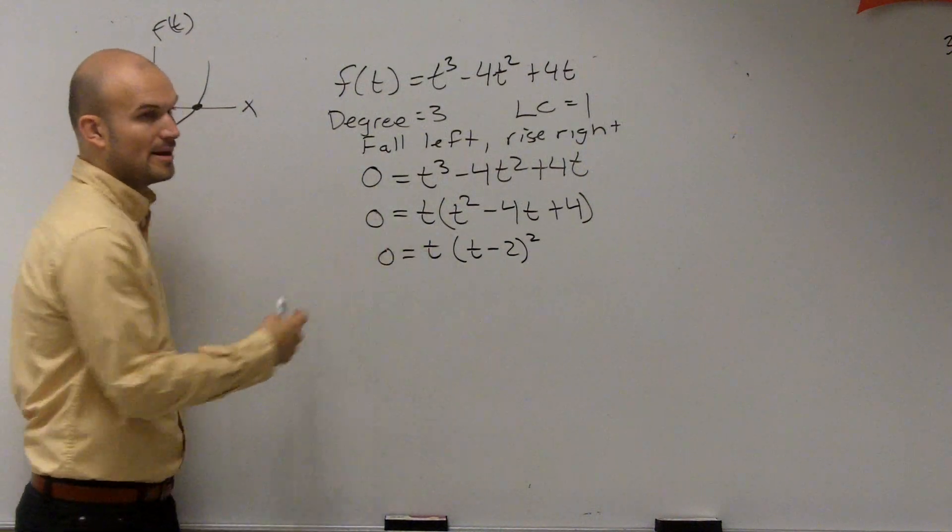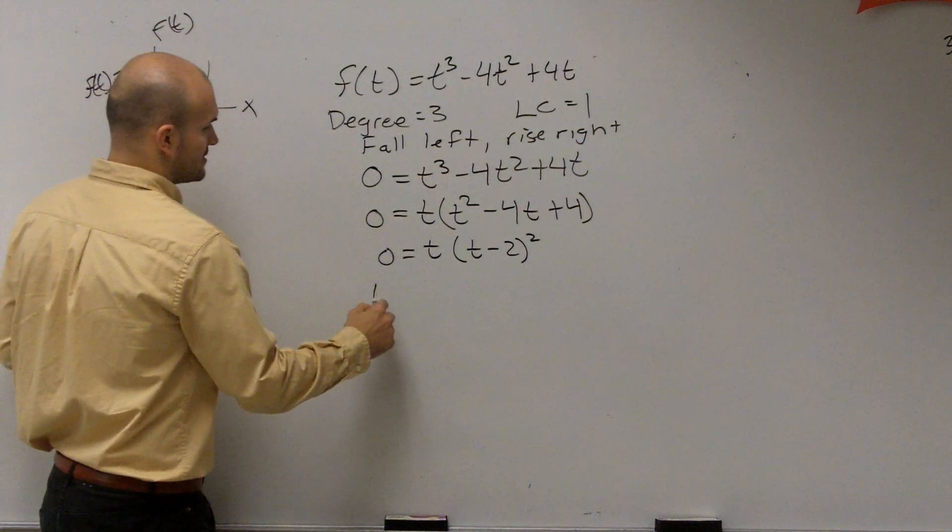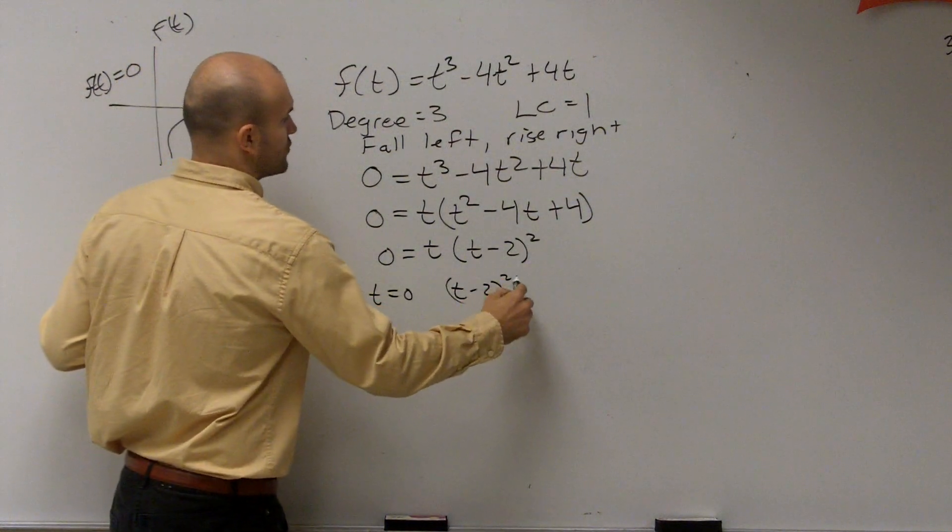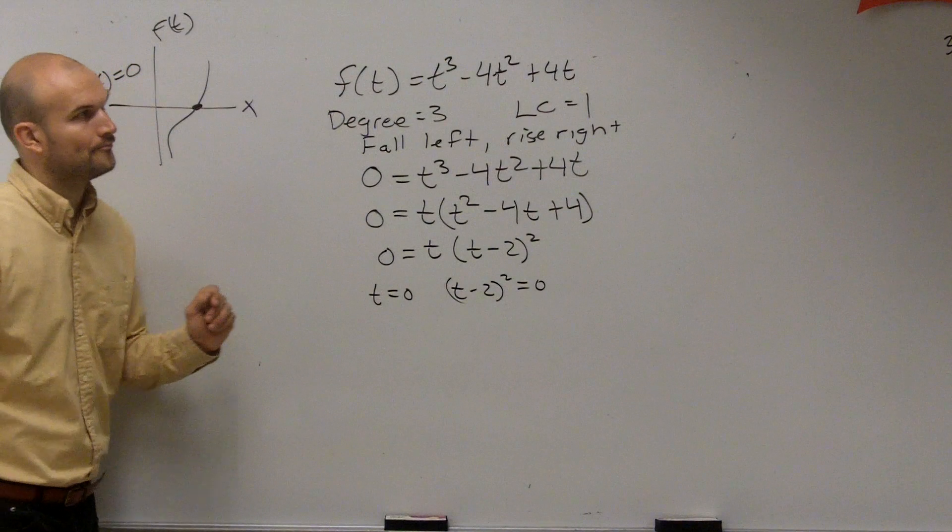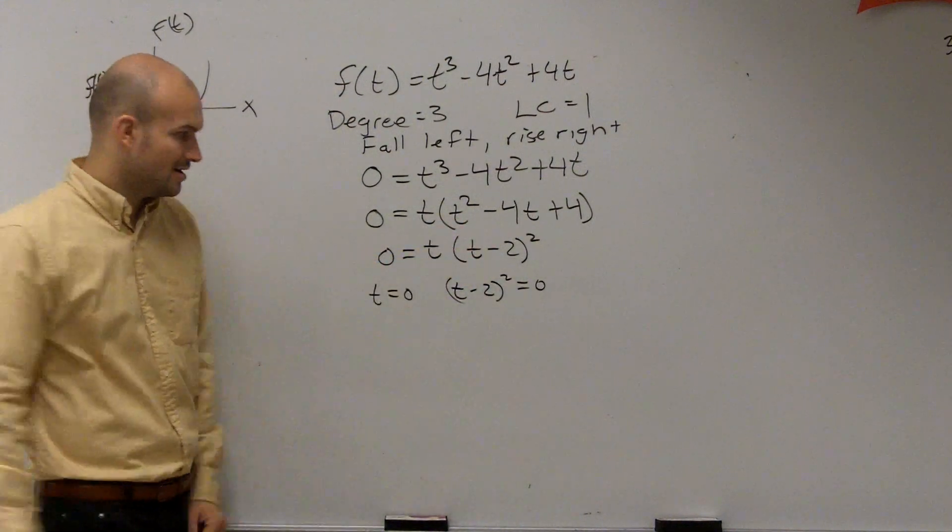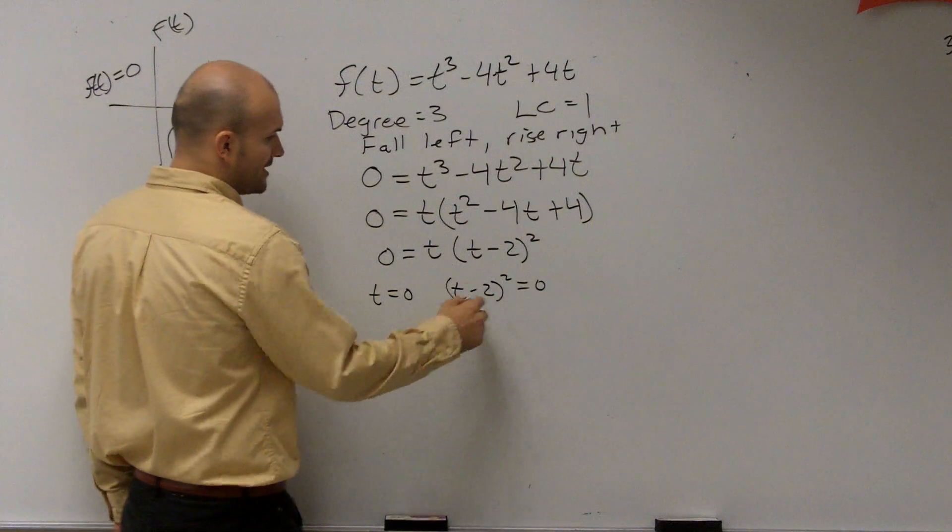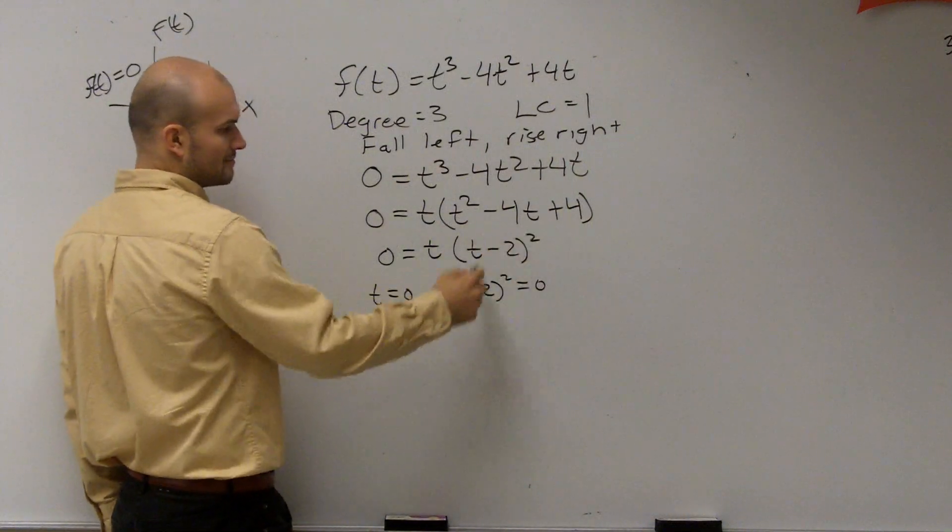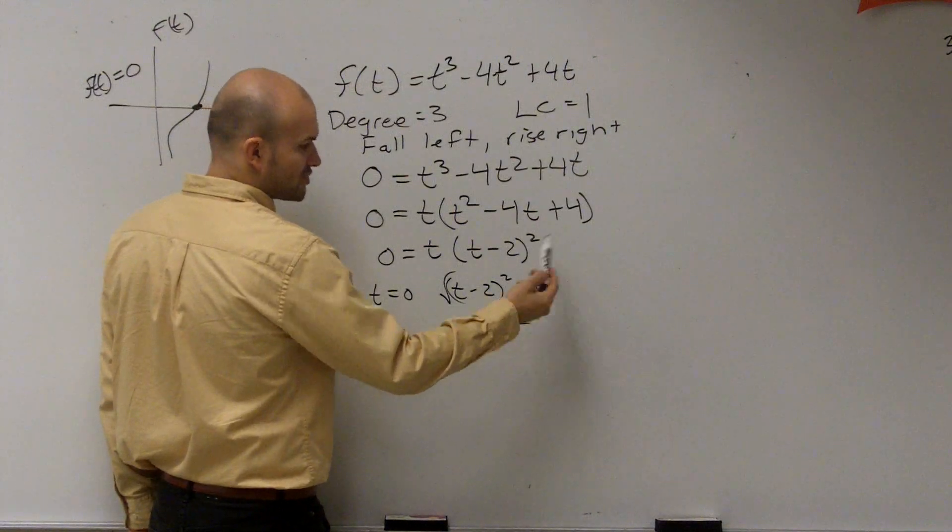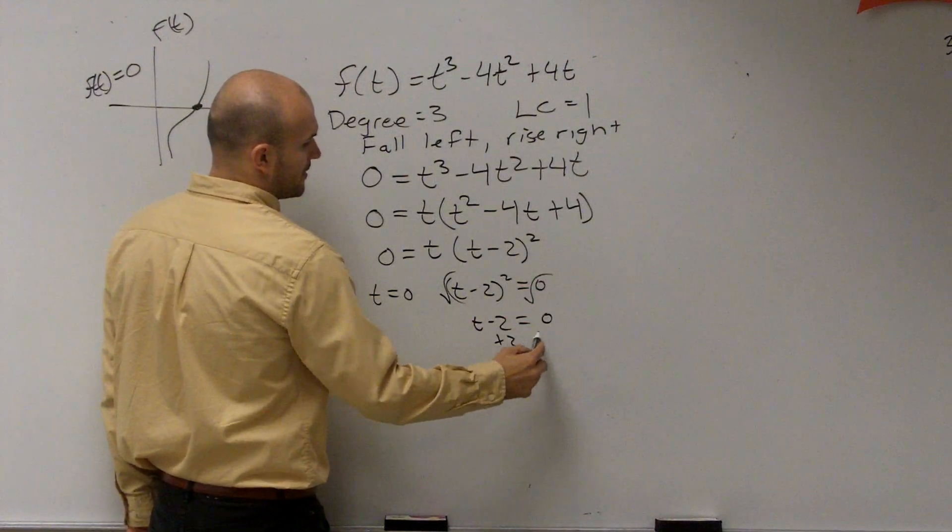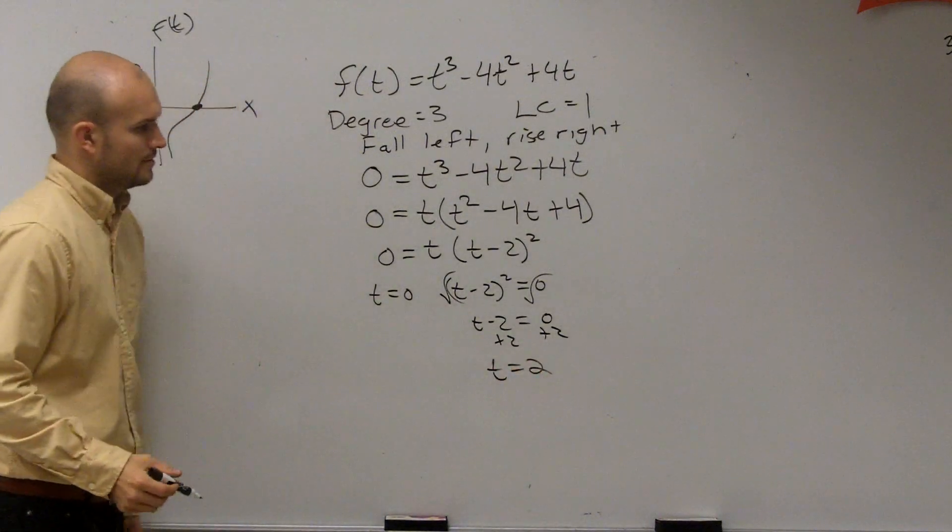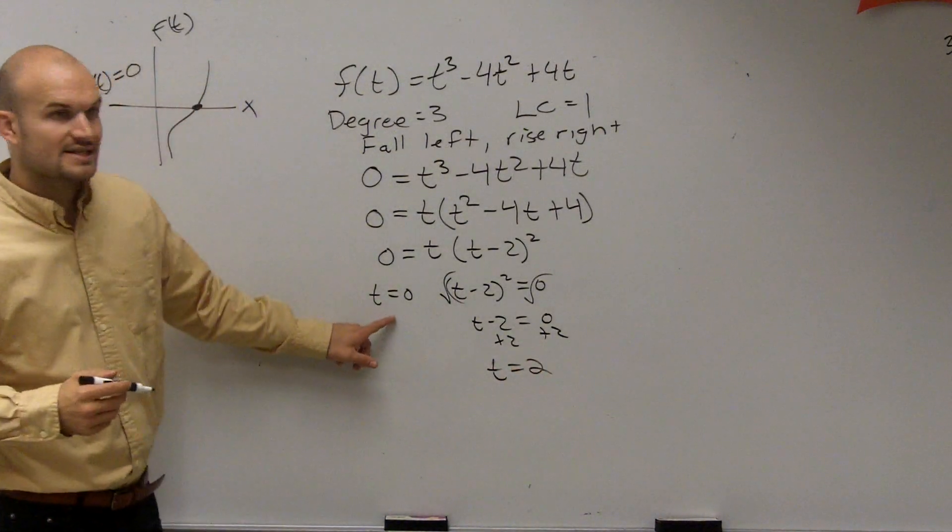All right, now let's find the zeros. So remember, zero product property. t equals 0, and t minus 2 squared equals 0. Solve for each one. t obviously equals 0. I don't need to solve that one. Here, I need the square root. So I get t minus 2 equals the square root of 0, which is 0. Add 2. So t equals 2.